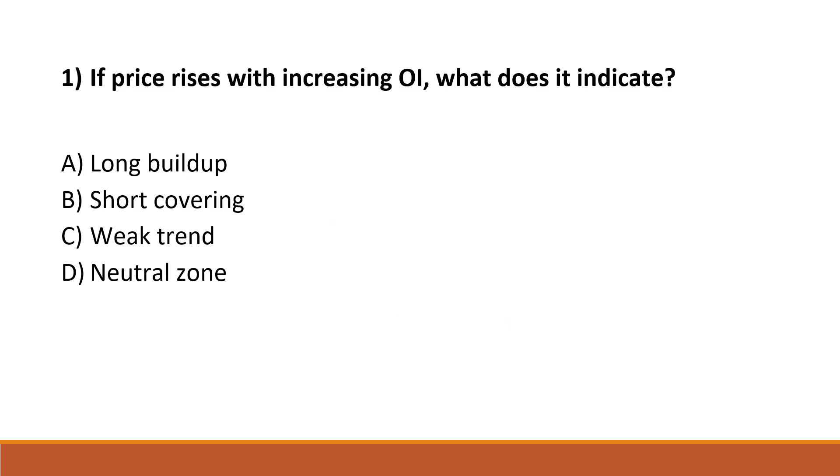First question: if price rises with increasing OI, what does it indicate? Option A: long build up. Option B: short covering. Option C: weak trend. Option D: neutral zone. The correct answer is Option A, long build up.